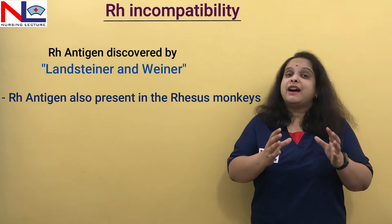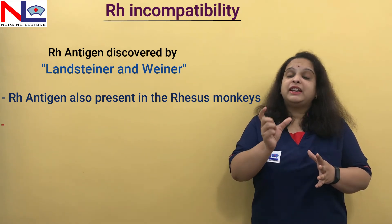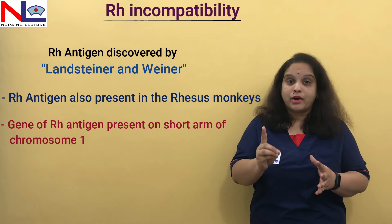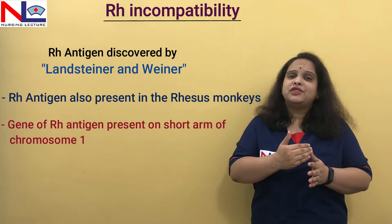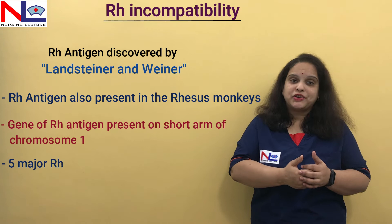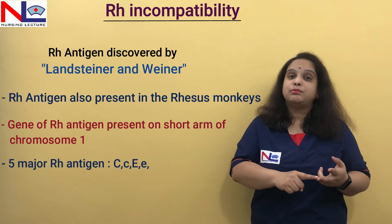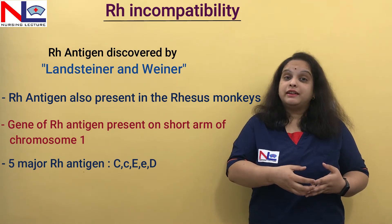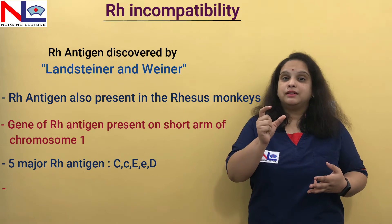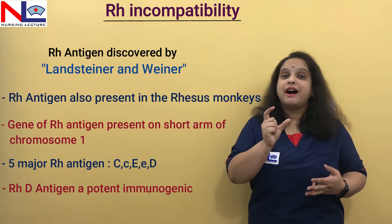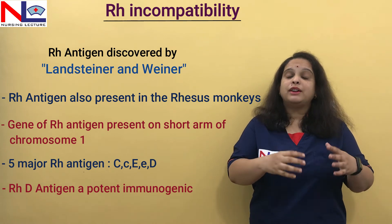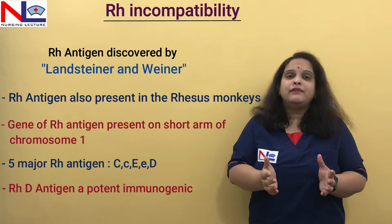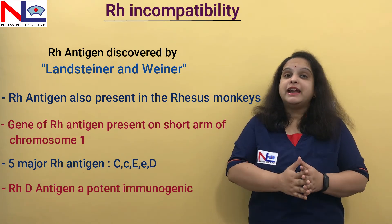The genetic location of the RH antigen is on the short arm of chromosome number one. There are mainly five types of RH antigens: capital C, small c, capital E, small e, and capital D. But the topic of concern here is the D antigen, which is the most potent immunogenic RH antigen, because the others are not as immunogenic as D. So everything we discuss here is about the D antigen only.